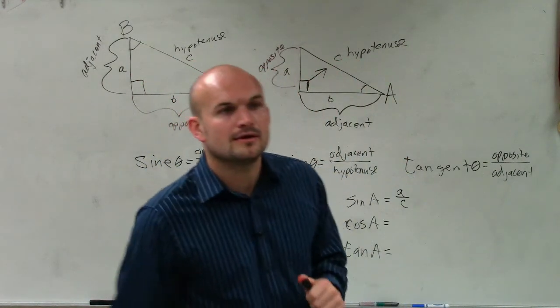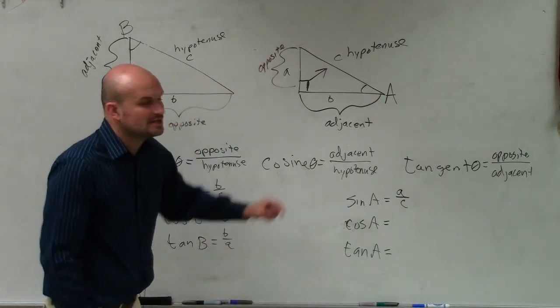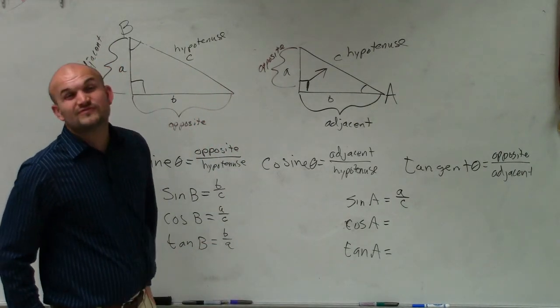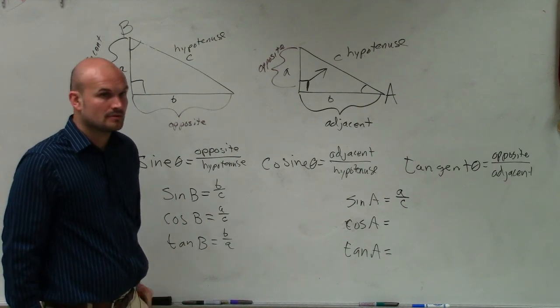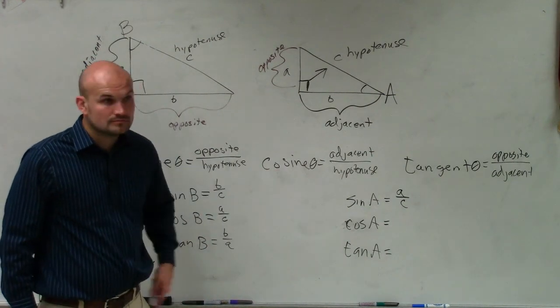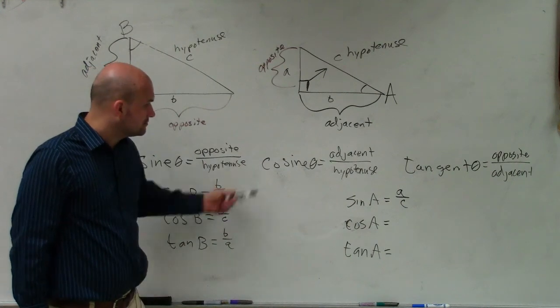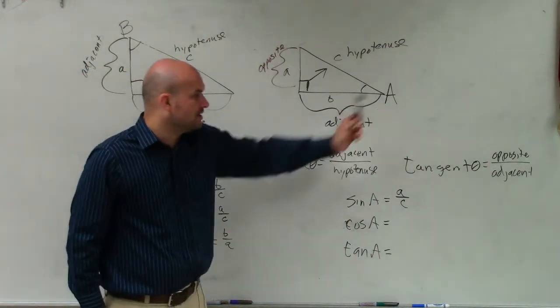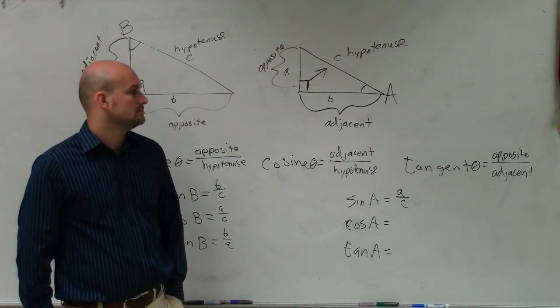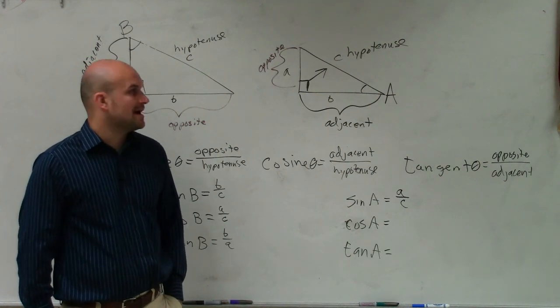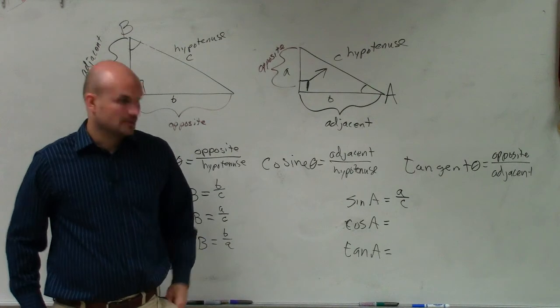All right, David, why don't you do it? Cosine. What is the cosine of A? What does the cosine function represent what ratio? Adjacent over hypotenuse. Good. So for angle A, what is my adjacent side? What letter? B. Good. What's my hypotenuse? C. There you go. Done.